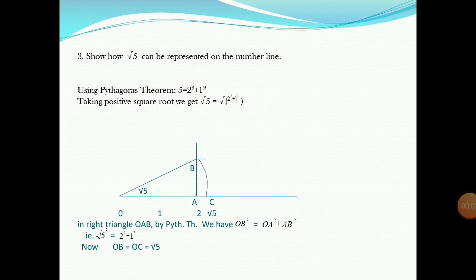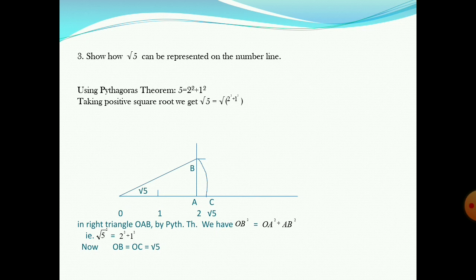The next question is: show how root 5 can be represented on the number line. We write 5 as 2 squared plus 1 squared. Taking 2 units on the number line, that is OA of 2 units, and at point A, draw a line AB perpendicular to OA of 1 unit. Now OAB is a right triangle. By Pythagoras' theorem, OB squared is equal to OA squared plus AB squared, that is 2 squared plus 1 squared, equal to 5. Therefore, OB is equal to root 5. Now with OB as radius and O as center, draw an arc which intersects the number line at point C. Therefore, OC is equal to root 5.